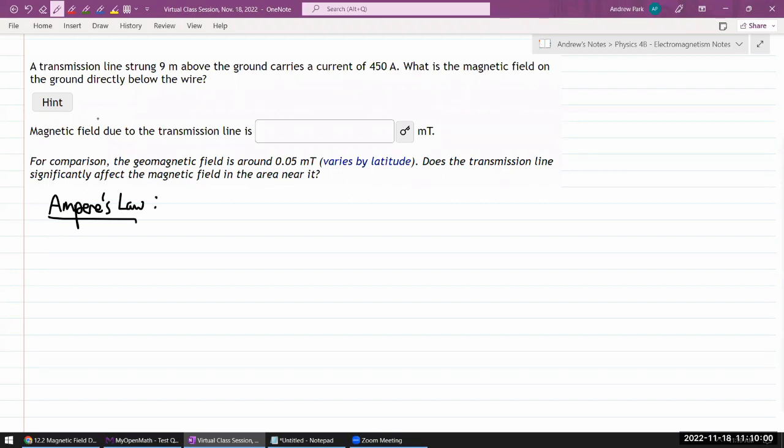What Ampere's law says is, it relates the line integral of the magnetic field around the closed loop that we call Amperian loop. The loop is imaginary, you define it. That line integral is related to what we are going to call enclosed current, the source of the magnetic field in this way: 4π times Coulomb constant over C squared times I enclosed.